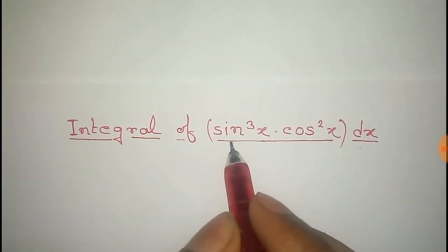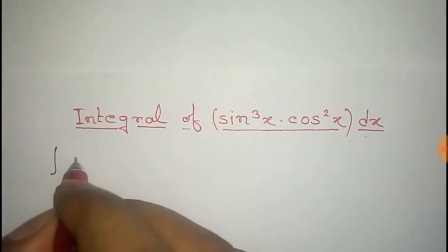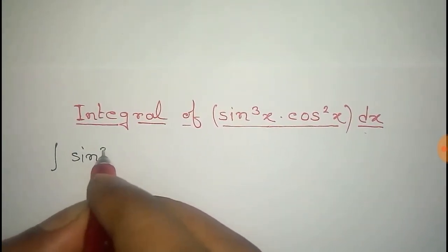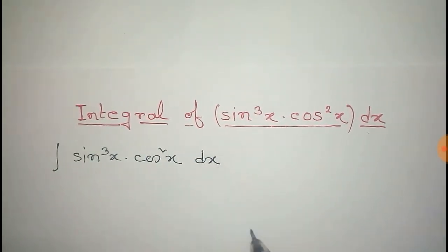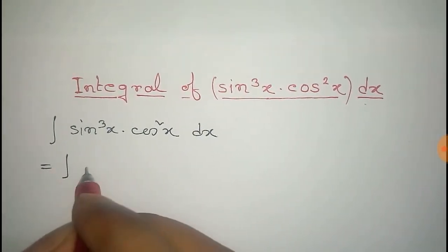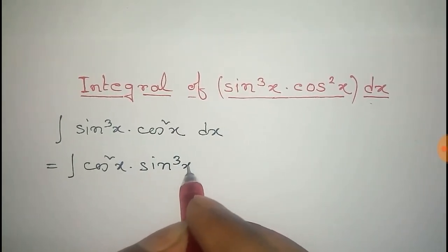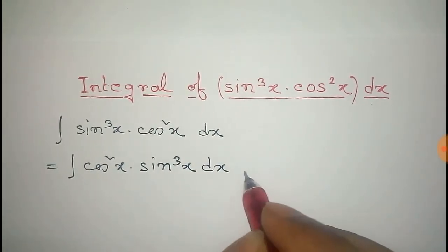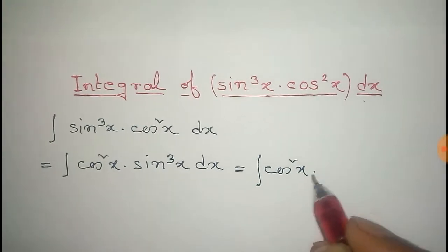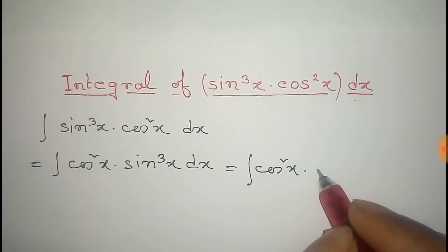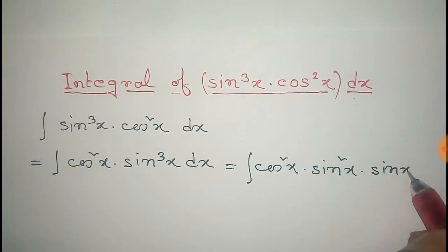In this video we will find the integral of sine cube x into cosine square x dx. We can rearrange this as the integral of cosine square x into sine cube x dx, where sine cube x is written as the product of sine square x and sine x dx.